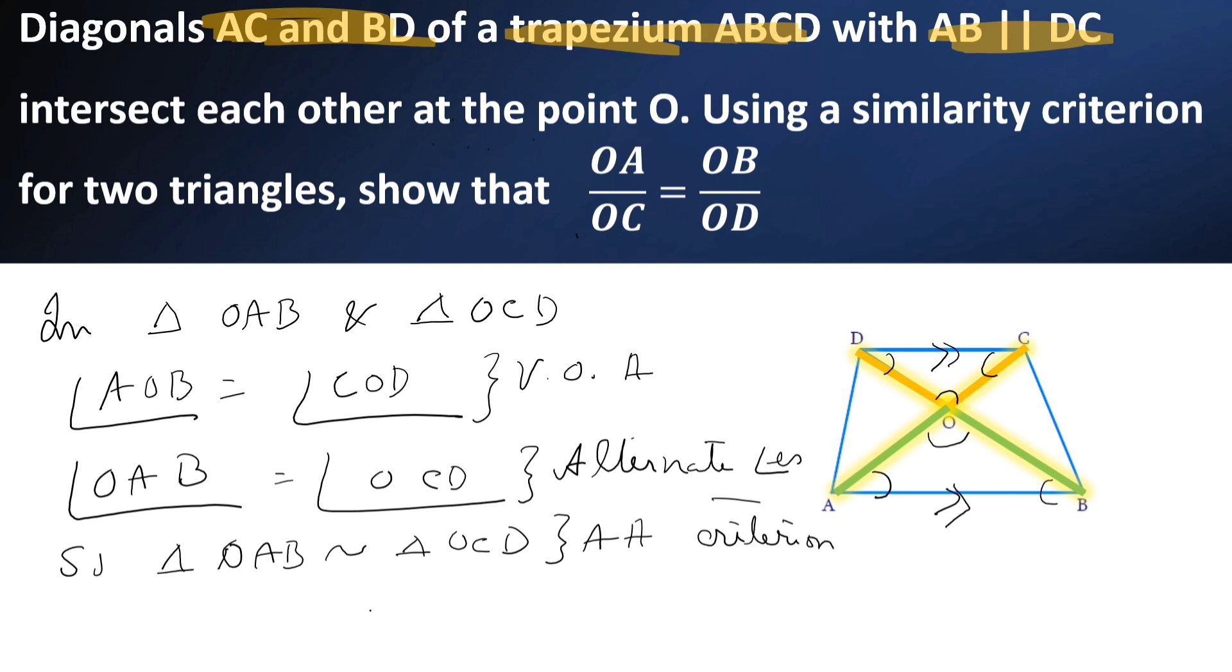If two triangles are similar, then the corresponding sides are in proportion. So, now we can write that OA by OC is equal to OB by OD. The same result we got. We are asked to prove this, OA by OC is equal to OB by OD.